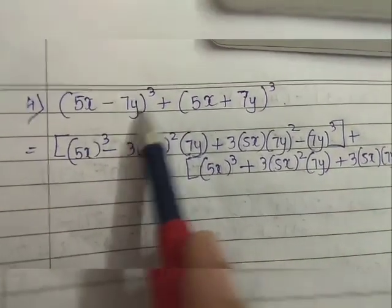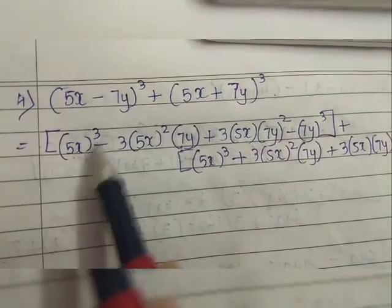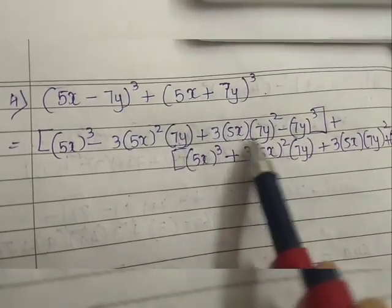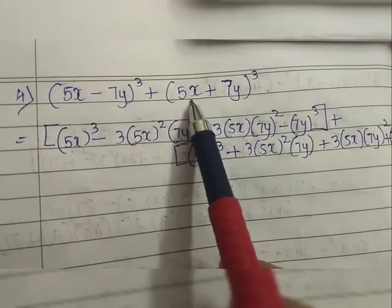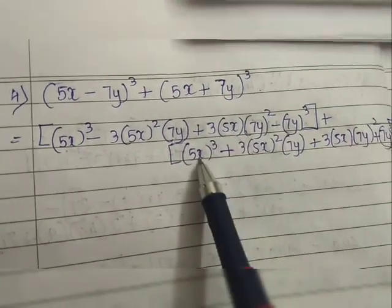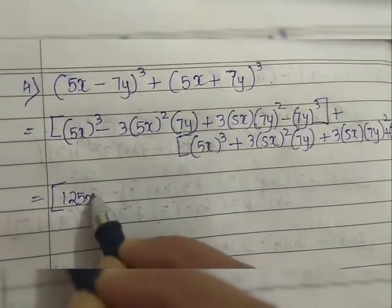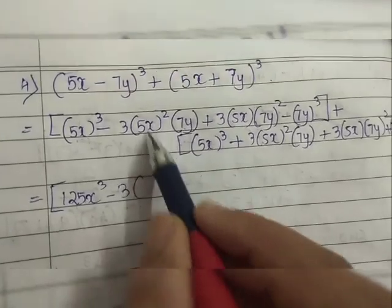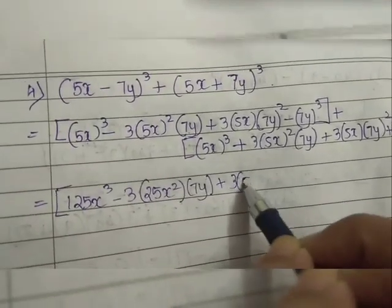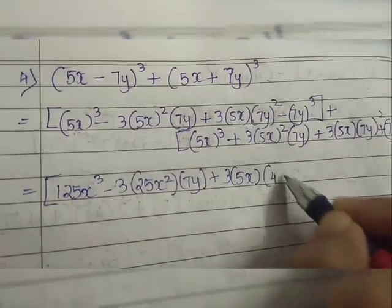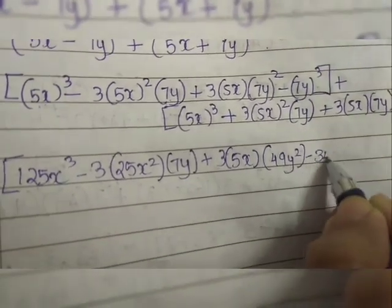For question number 4, we use (a-b)³ and (a+b)³. Substituting the values into the expansion formula: a³ - 3a²b + 3ab² - b³, where a = 5x and b = 7y. Similarly for the second bracket with a = 5x and b = 7y. Opening the first bracket: the cube of 5x is 125x³, three times the square of 5x is 25x², times 7y. The square of 7y is 49y², and the cube of 7 gives 343y³.